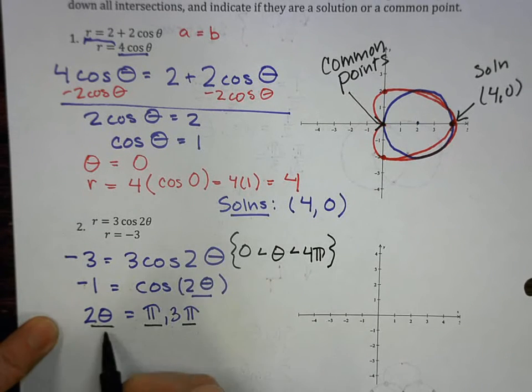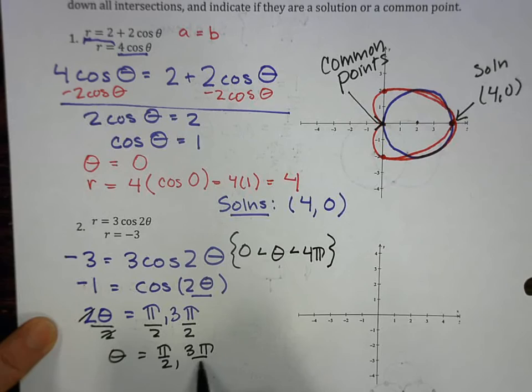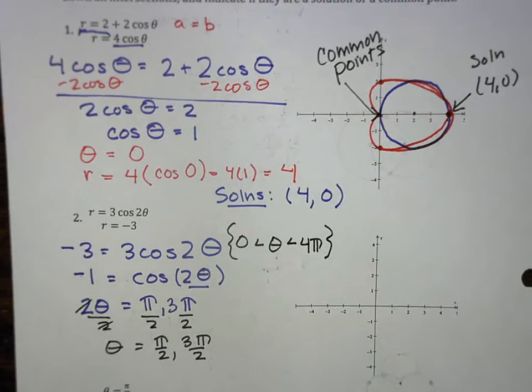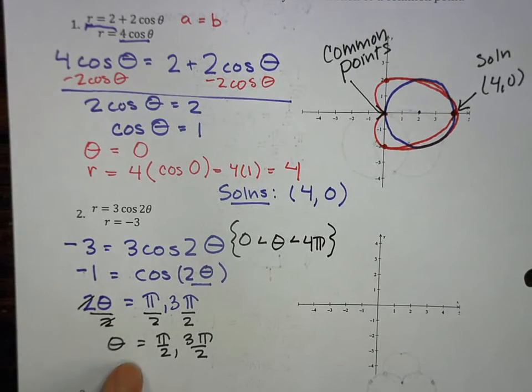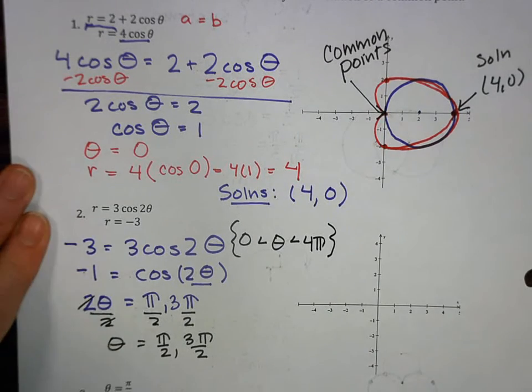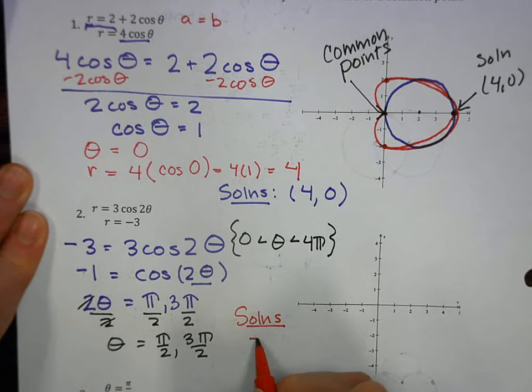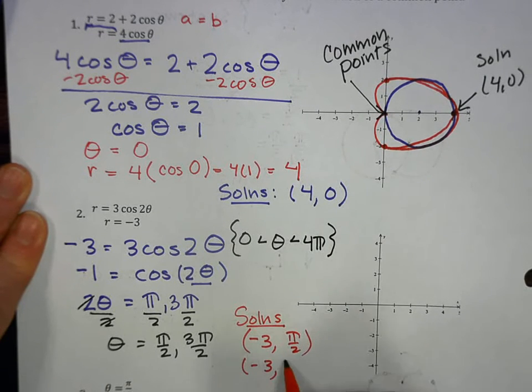But I am solving for theta, so I divide everything by 2. Theta equals, the 2's cancel, pi over 2, and 3 pi over 2. Now, so now I have 2 solutions with an r equals negative 3. So my solutions, algebraically, are negative 3 pi over 2, and negative 3, 3 pi over 2. Let's graph these and see what we come up with.